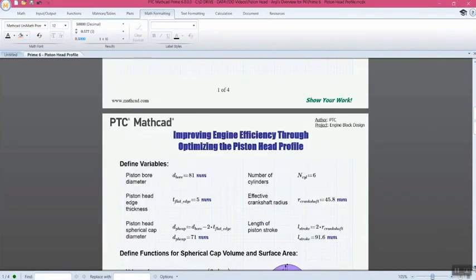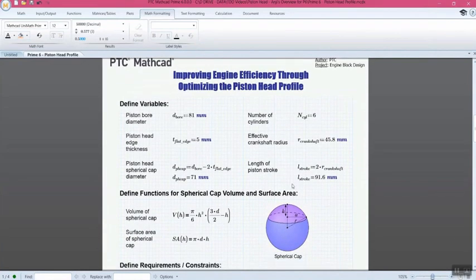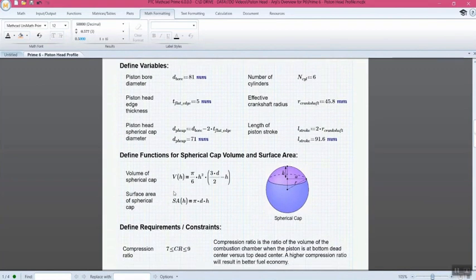And next, we can start to define the values that we'll be needing to use. And this can really be anything. In our case, we have our bore diameter, the head edge, thickness, number of cylinders, and a few more. Again, for all those values, type in the units and then let the system figure them out for you in the calculations. After that, we'll move on to defining some of the functions to calculate the volume and surface area for the spherical cap. And these functions reference the diagram on the right. In MathCAD, these functions can utilize the variables that we laid out. In this case, we see that both the volume and surface area of the spherical cap utilize both the height and diameter that we can draw from our diagram.